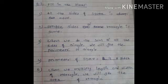Fifth one, when we multiply length and width of rectangle, we will get the dash of rectangle. Jab hum rectangle ki length and width ka multiply karte hain, to hamein rectangle ka kya milta hai? Area.